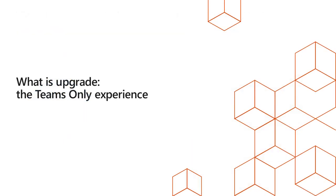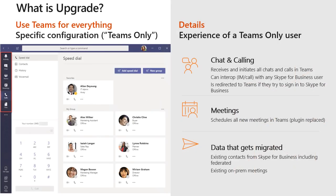So what is an upgrade? We refer to it as the Teams only experience. The definition of upgrade in this training is to utilize Teams for all of the various modalities that Teams can provide — this includes chat, calling, meetings, and collaboration. Basically everything the Teams client is capable of providing means you have been successfully upgraded. This is referred to as a specific configuration or coexistence mode that we call Teams only.